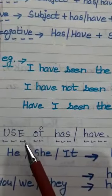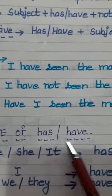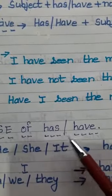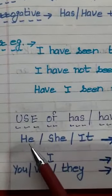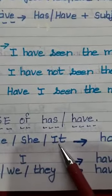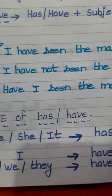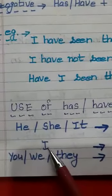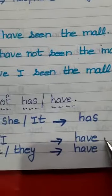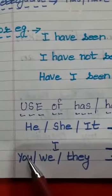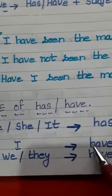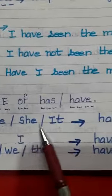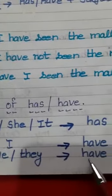Now it's the turn of uses of has and have. When we have singular pronouns — he, she, it — we use 'has'. With the personal pronoun 'I', and with plural pronouns — you, we, they — we go with 'have'. So with singular ones we go with has, and with plurals we go with have.